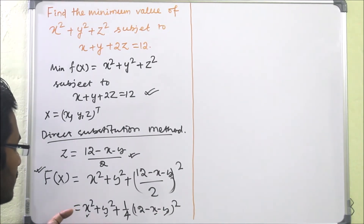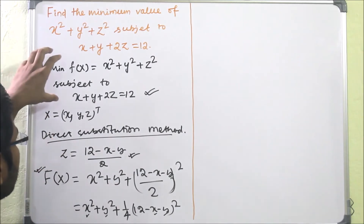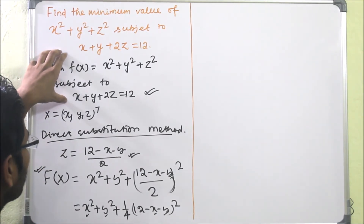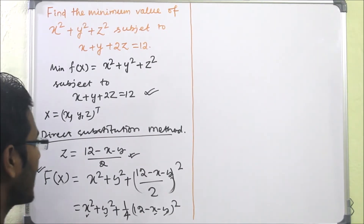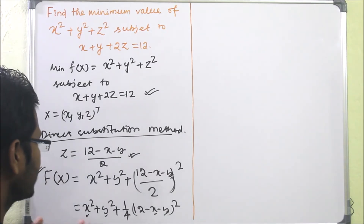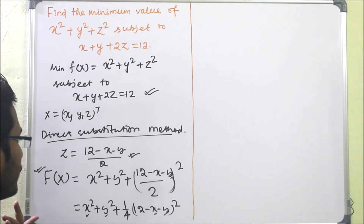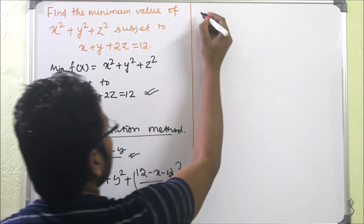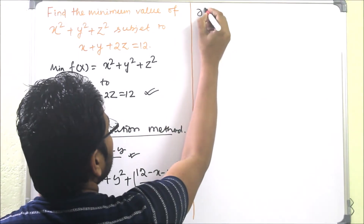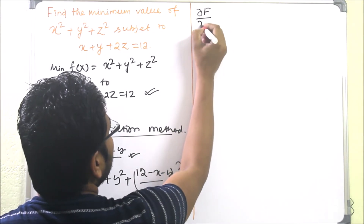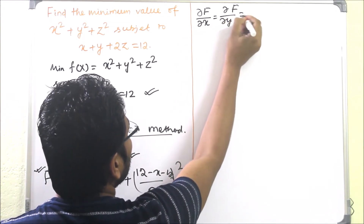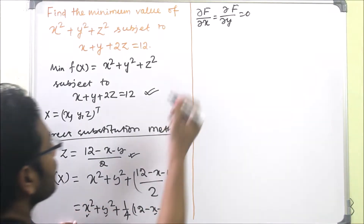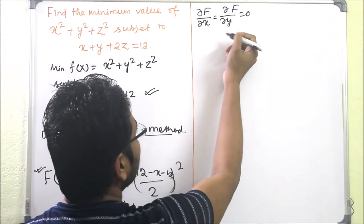We have converted this equality-constrained problem to an unconstrained problem. Using the classical procedure to find the minimum, we first apply the necessary condition: ∂F/∂x = 0 and ∂F/∂y = 0, since we have two variables.